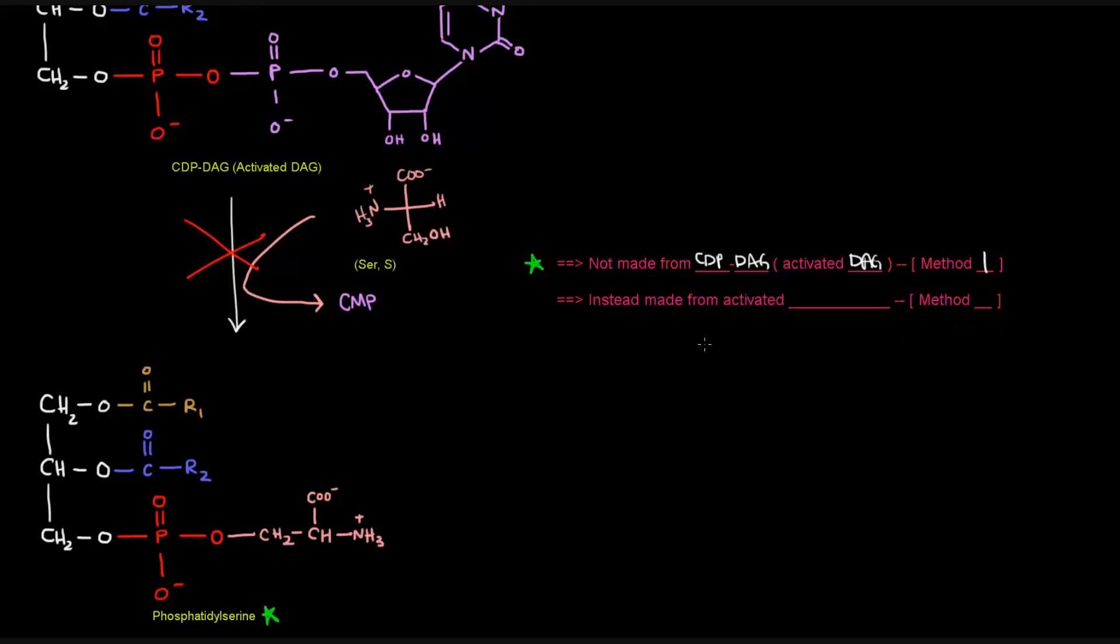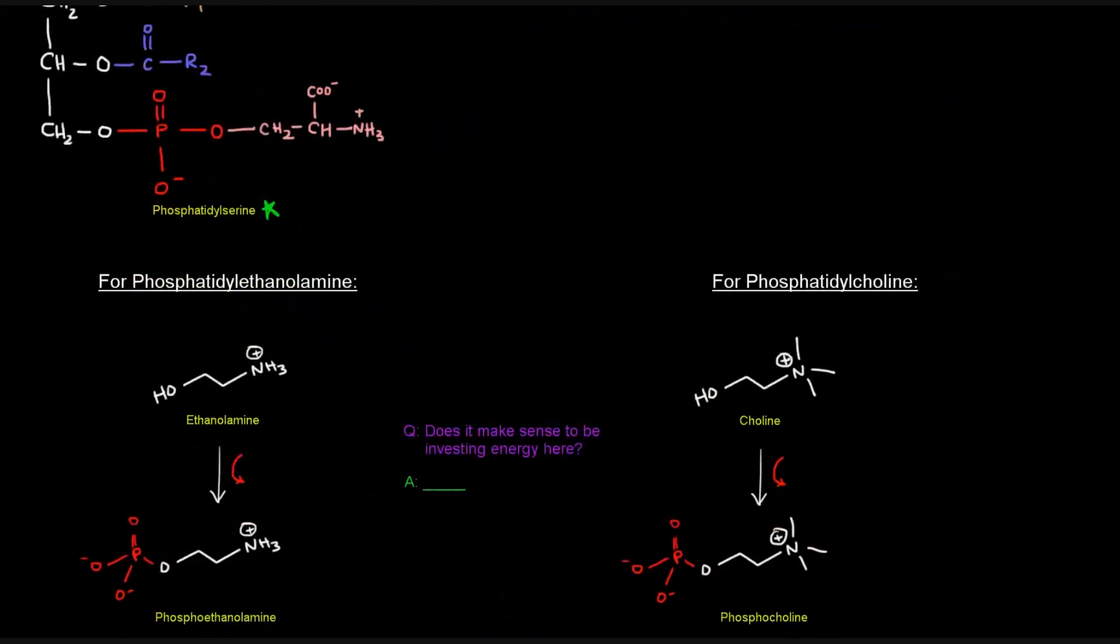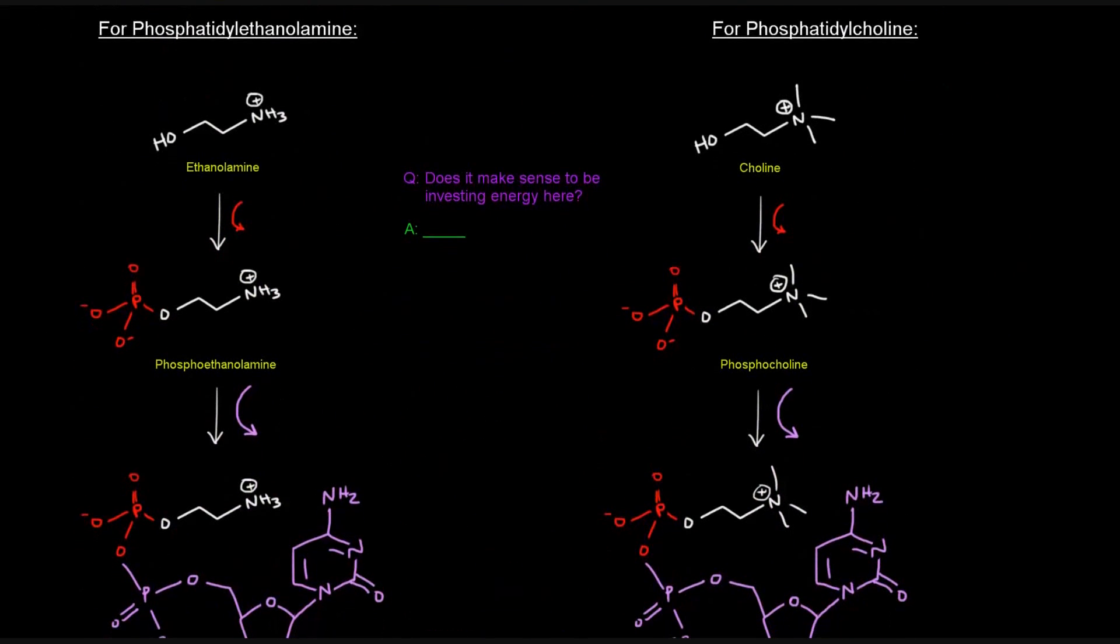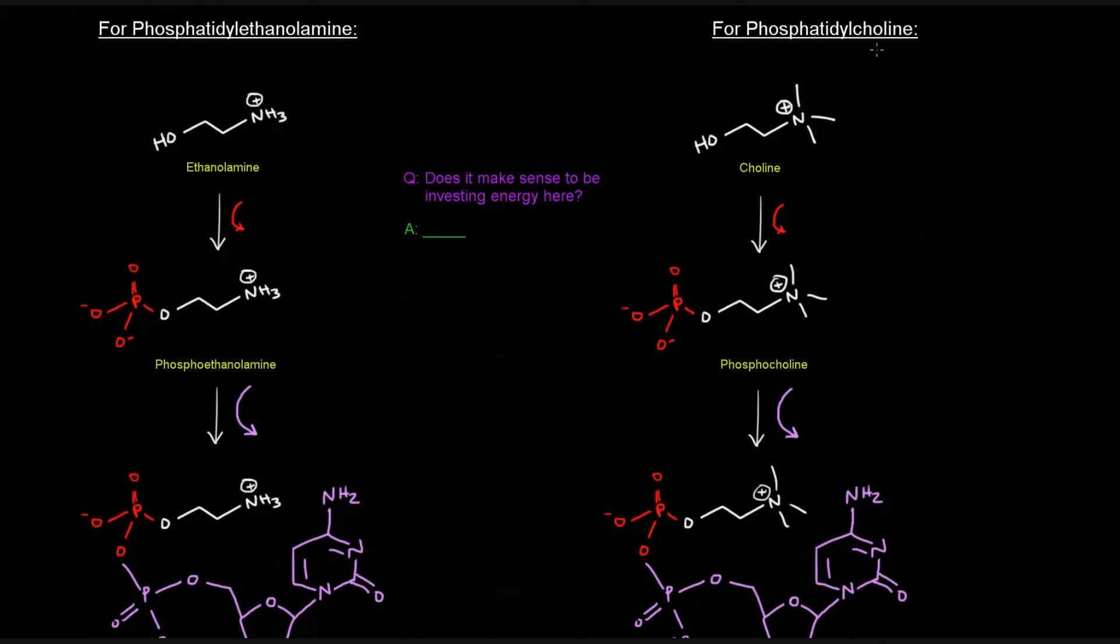This particular glycerophospholipid, phosphatidylserine, in mammals, although mammals can have both method one and method two both occur, method one is not used to make phosphatidylserine. It's not made from CDPDAG, activated DAG. It's not made from method one. Instead, it's made from activated alcohol, which is method two. Now, I'm not actually going to draw that. I encourage you to try it on your own after I show you two different examples.